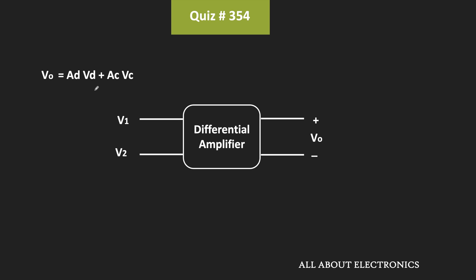If you know about the differential amplifier, the output can be given as Ad times Vd plus Ac times Vc, where Vd is the differential input signal and Vc is the common mode input signal. The ideal differential amplifier only amplifies the differential input signal and completely rejects the common mode input signal — meaning for the ideal differential amplifier, the common mode gain should be equal to zero.